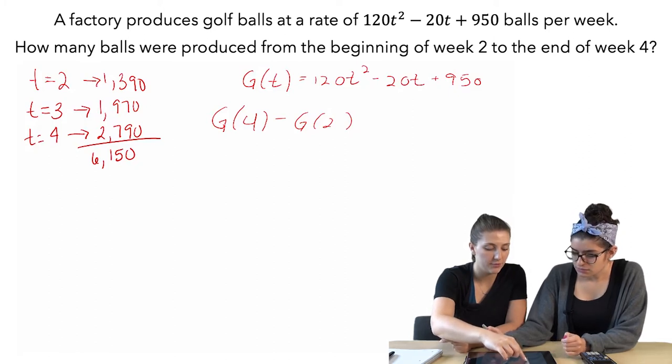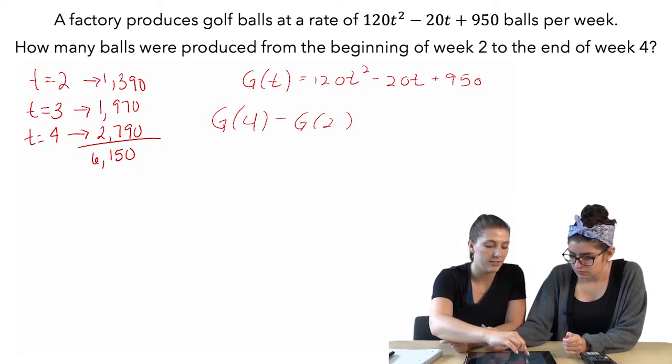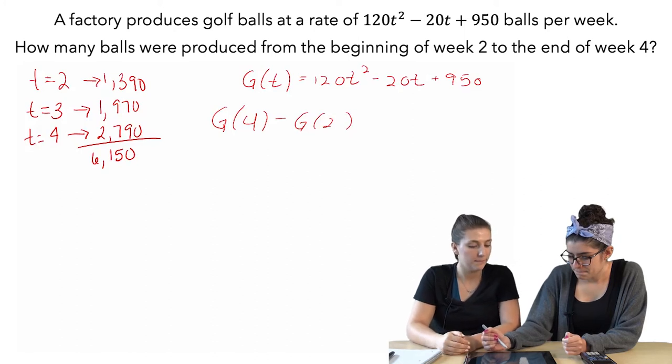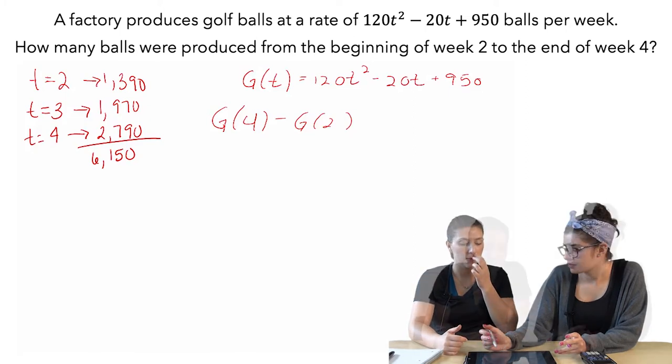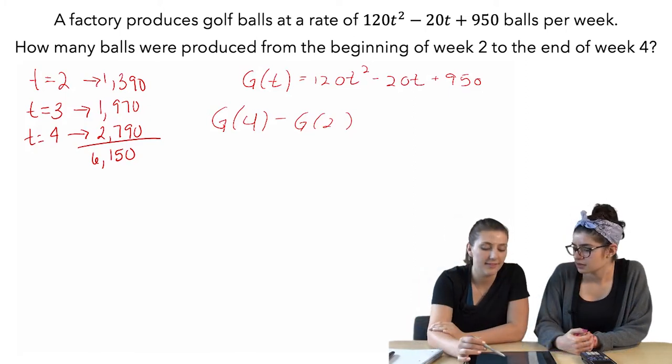No, because we would do g(4) minus g(2). So it would be the 2790 minus the 1390. Okay. So then which one makes sense to do? I don't know. You know what? This is a rate.